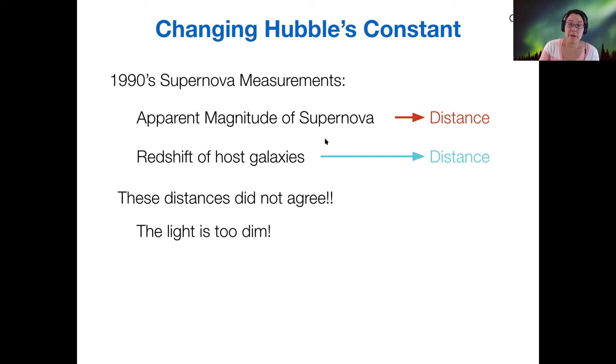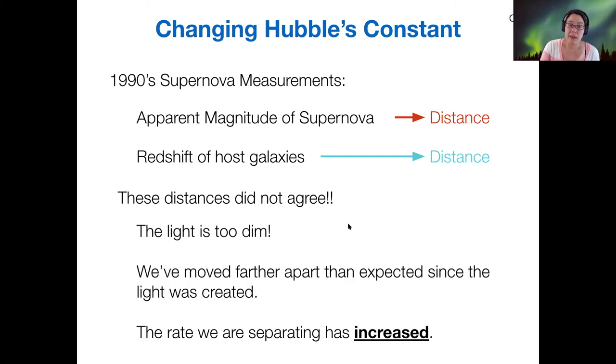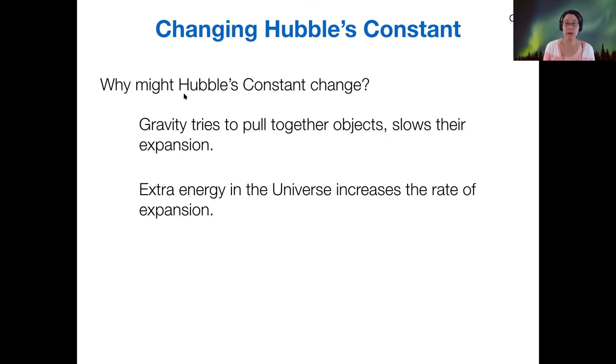But it turned out that even considering those as possibilities, it still didn't cause those distance measurements to come into agreement. So if the light of a supernova is too dim, if the apparent magnitude is too dim, then that means that we've actually moved farther away than we actually expected based on Hubble's law, since they sent their light. And so that means that the rate of expansion, the rate that we have separated has increased over time. So this is what we call the acceleration of expansion.